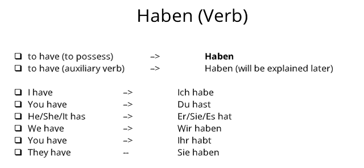Let's learn the usage of the verb 'haben' in German. In German, 'haben' has two different meanings. The first is to show possession of something — for example, 'I have a car' or 'I have a house.' You can use the verb 'haben' to express this possession.